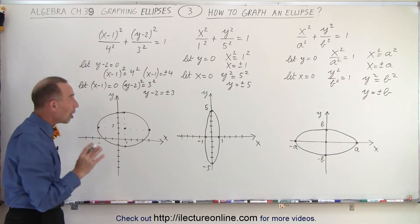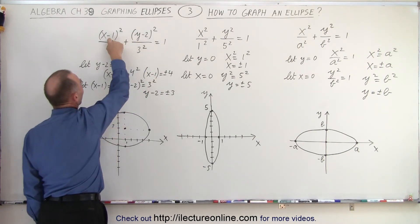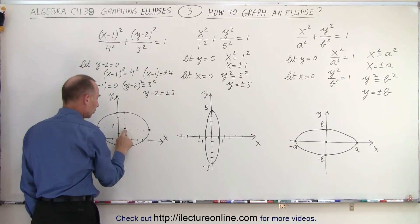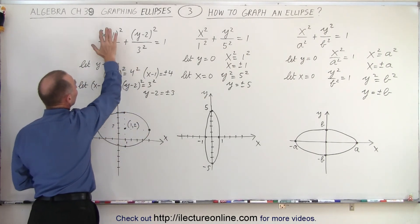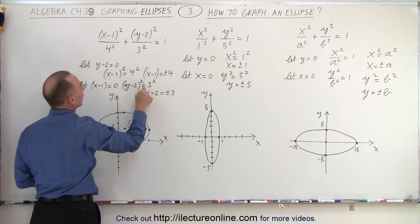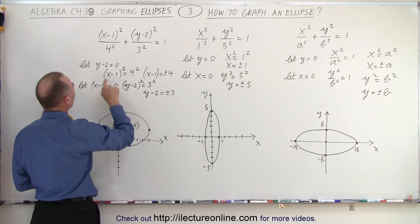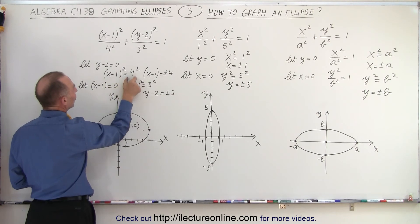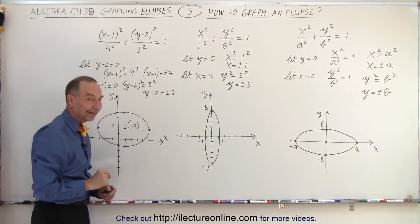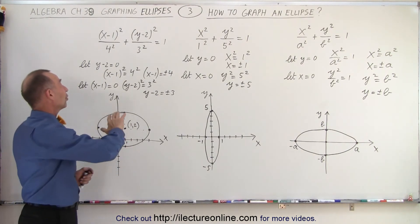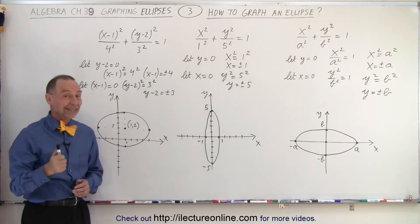And that's how you draw an ellipse once you have the equation. The easiest approach is to find the offset point — in this case shifted 1 to the right and 2 up, giving central point (1, 2). Then from that central point, set y − 2 = 0 to find x moves of ±4, and set x − 1 = 0 to find y moves of ±3. Plot all four points and connect them. Doing it this way is much simpler than expanding the algebra.